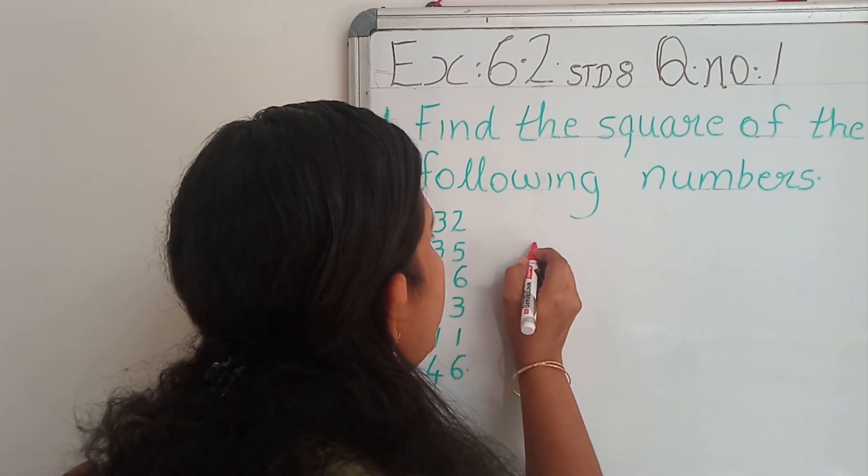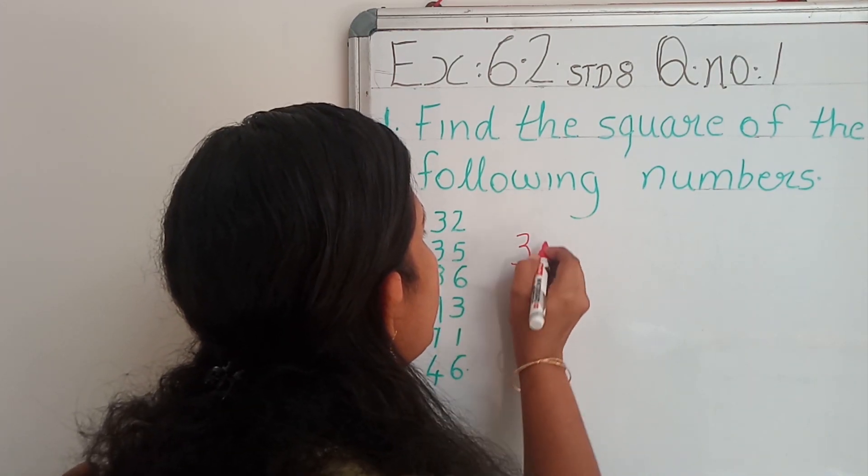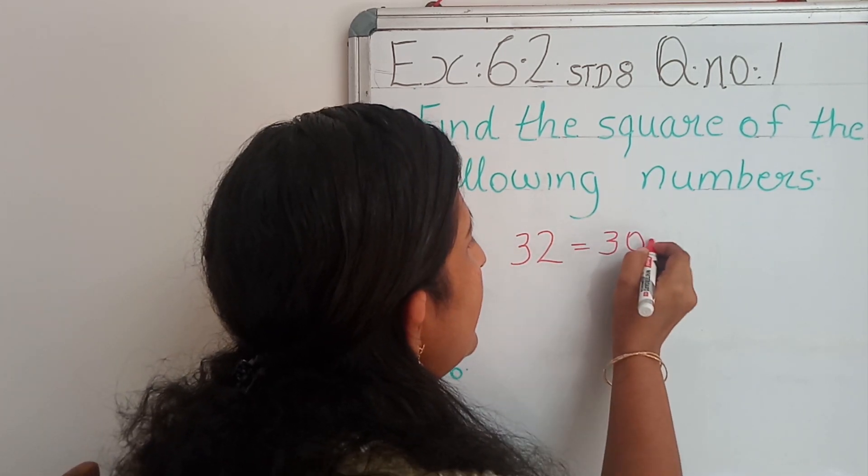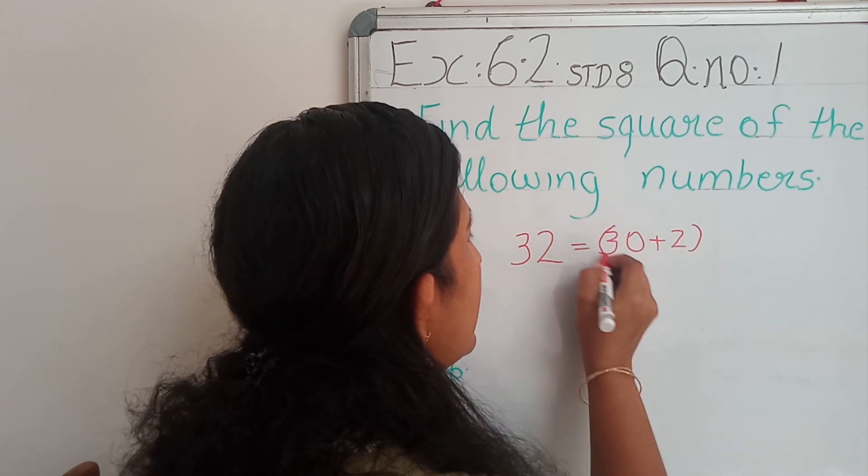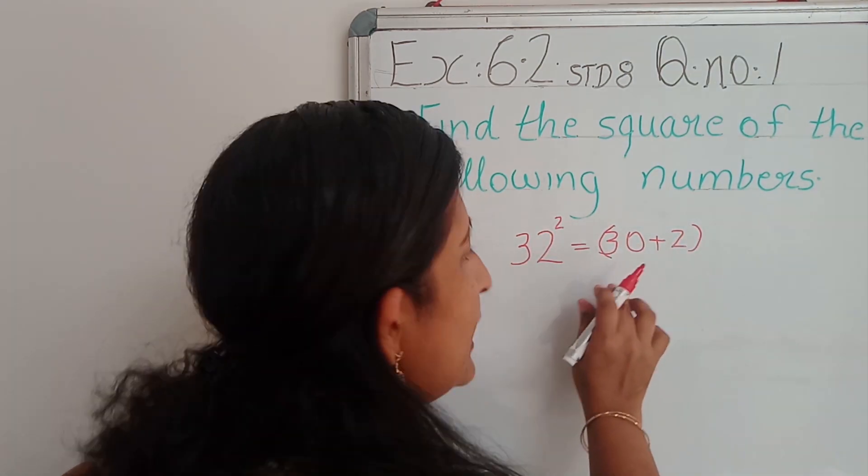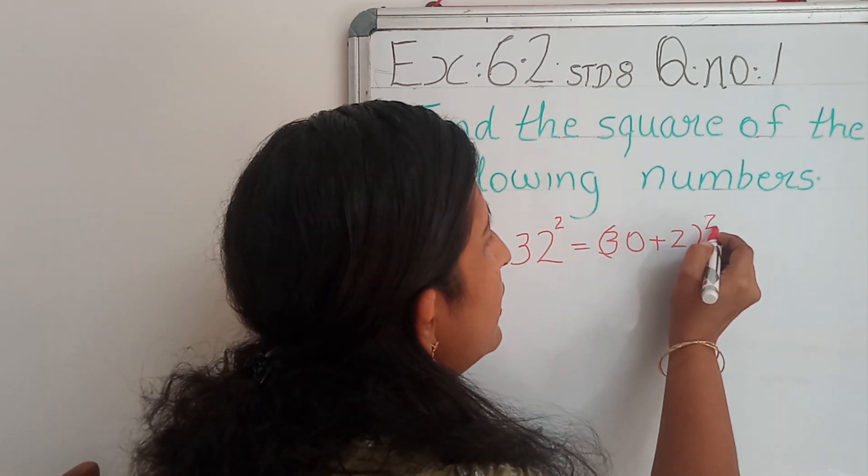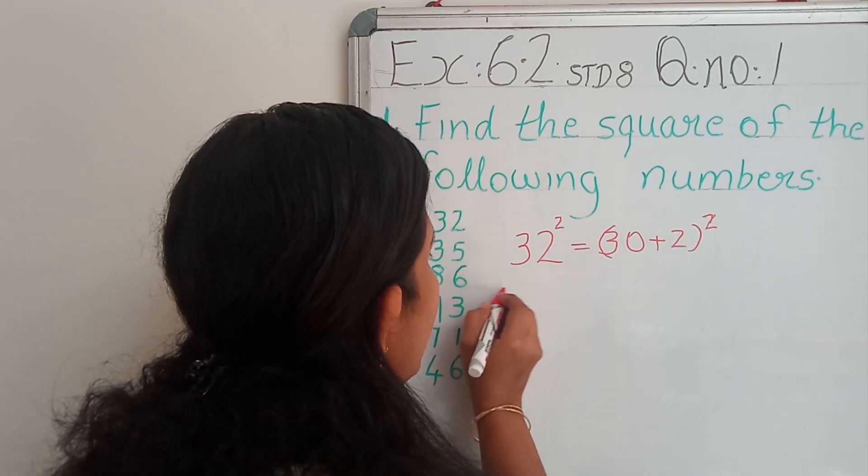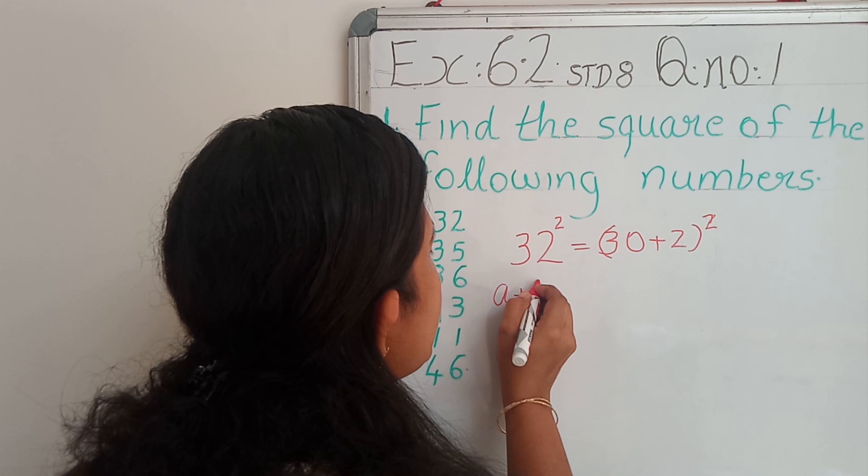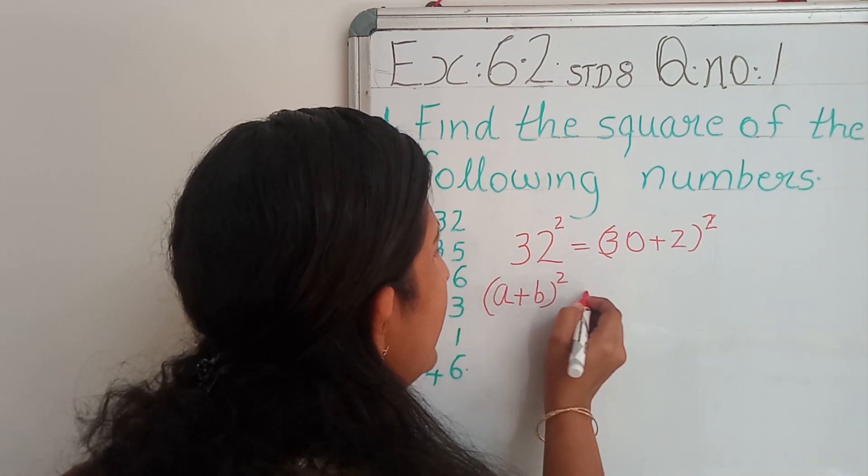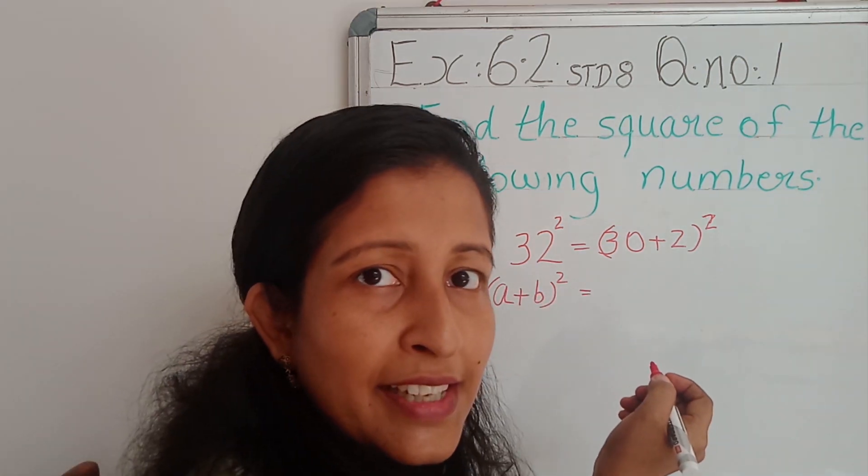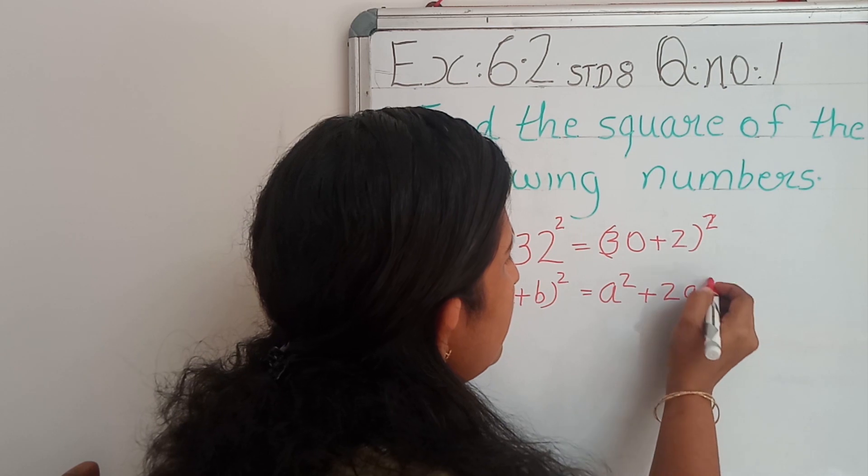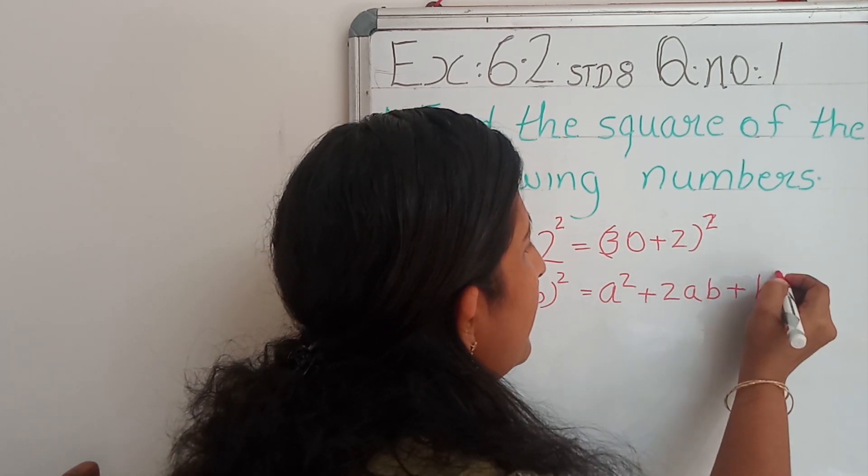See, 32 can be written like this. I am going to split this 32 as 30 plus 2. So, 32 square will be 30 plus 2 the whole square. Now, we can apply an identity. Identity is A plus B the whole square equal to A square plus 2AB plus B square.